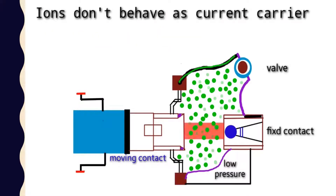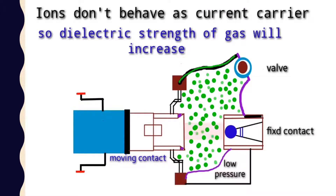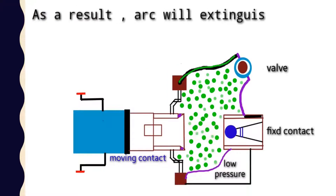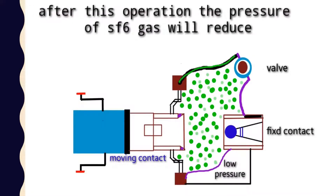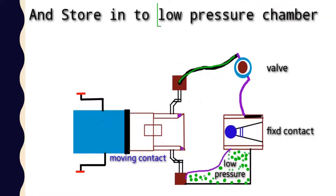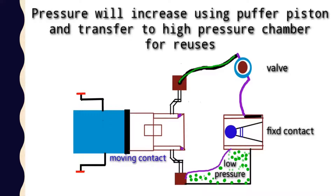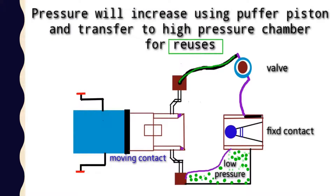The SF6 gas converts the free electrons into ions. These ions do not behave as current carriers, which causes the dielectric strength of the gas to increase. This causes the arc to be completely extinguished. After this operation, the SF6 gas pressure reduces and it is stored in the low pressure chamber. Using the puffer piston pressure, the gas pressure is increased again and it is reused.